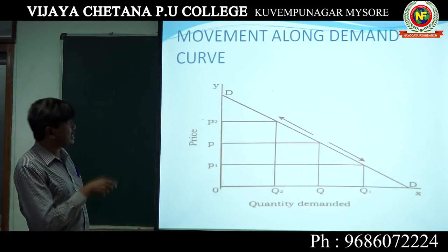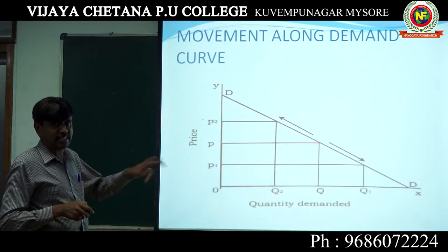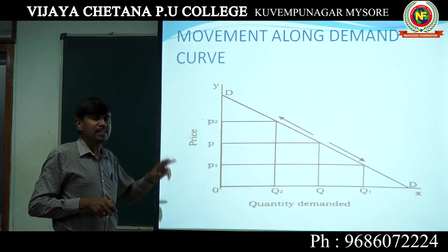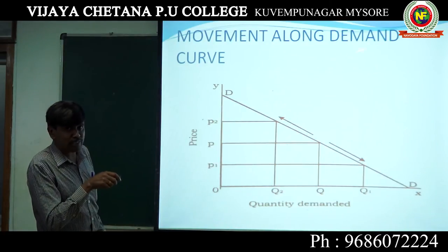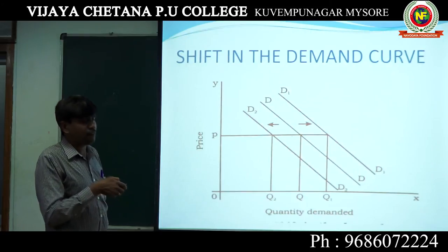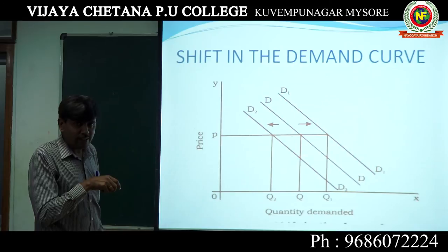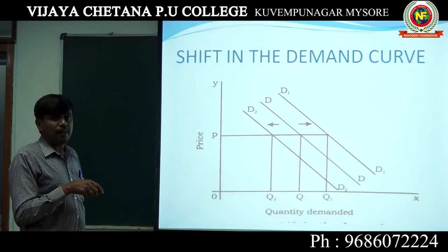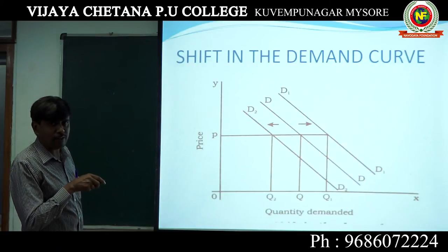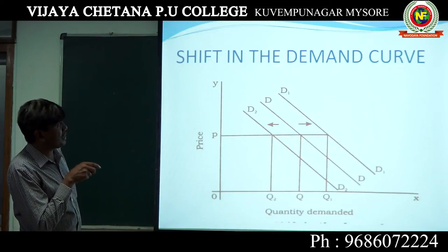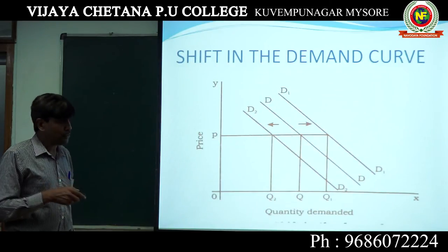So this is what the shift in demand curve means — it occurs due to changes other than price. If we consider only price as the factor, then it is movement along the demand curve. If quantity demanded changes just because of price, it is called movement along the demand curve. When price is constant but demand changes, it is called shift in demand curve.